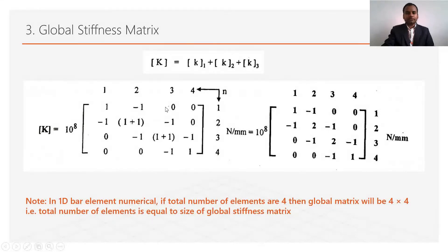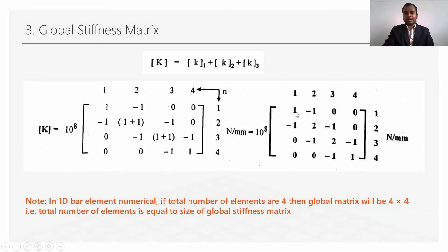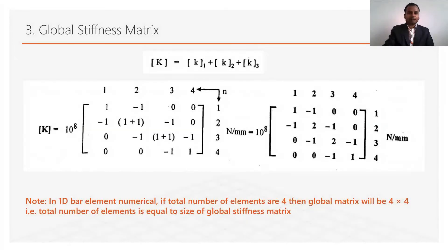Summing all values — 1+1=2 — the global stiffness matrix is obtained. This completes step number 3 of the finite element analysis.